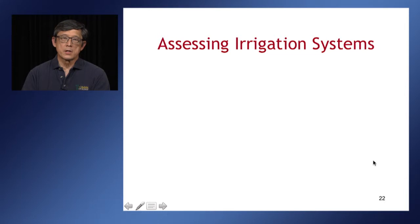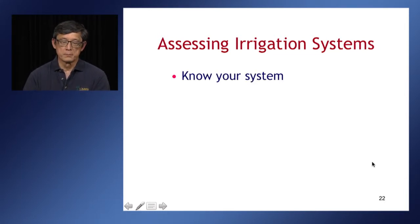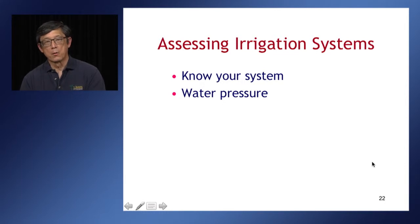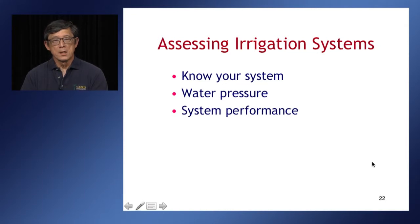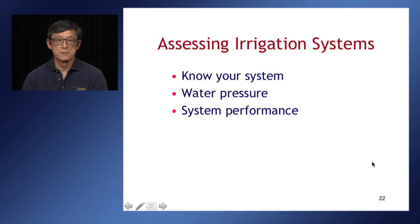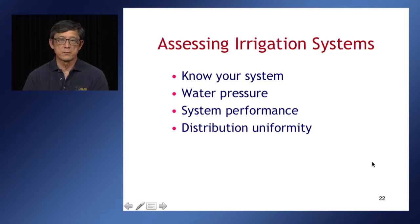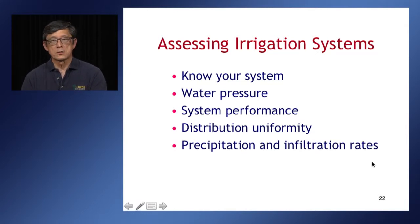To make sure our irrigation systems are working properly, we need knowledge of our system — all the details — and I'll go through that. We need to know about water pressure because it has a direct effect on how we irrigate. We need to make sure that our system is performing optimally and that water is applied in the manner it was designed for. I'll also talk about precipitation rates and infiltration rates.